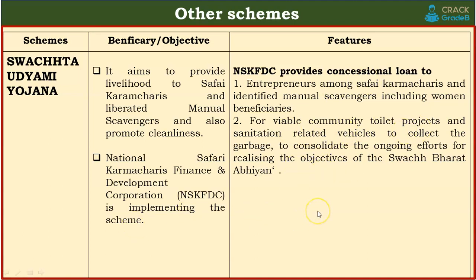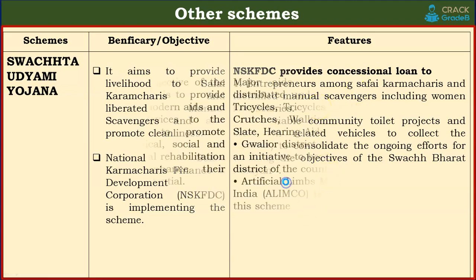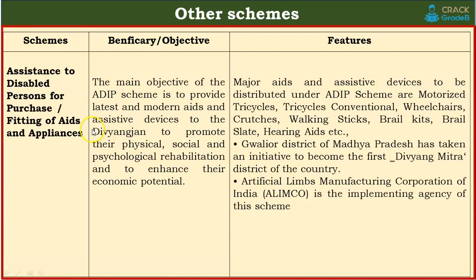The government will also provide loans to safai karamcharis and manual scavengers to fulfill these objectives. Our next scheme is Assistance to Disabled Persons for Purchase/Fitting of Aids and Appliances, known as the ADIP scheme. The main objective is to provide the latest and modern aids and assistive devices to Divyangjan to promote their physical and social rehabilitation and to enhance their economic potential.